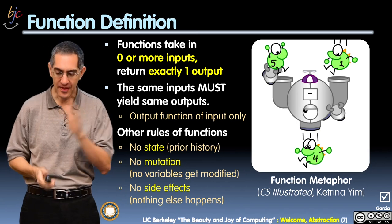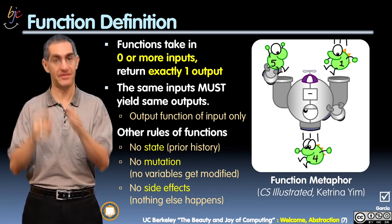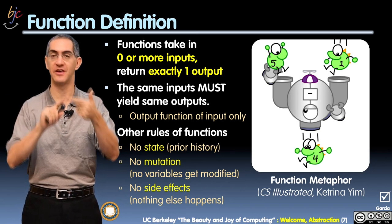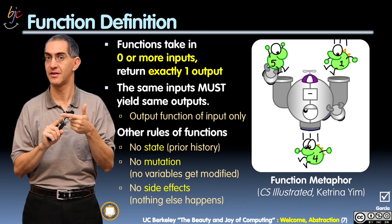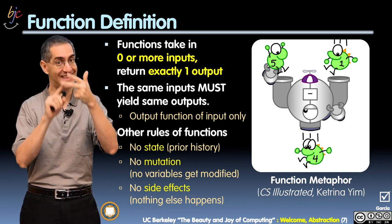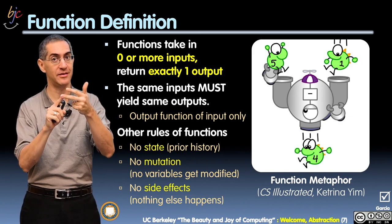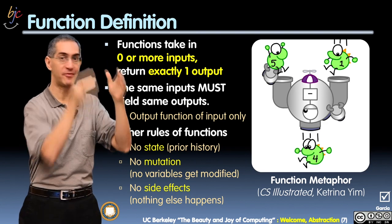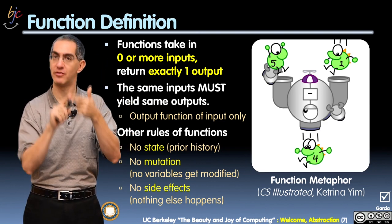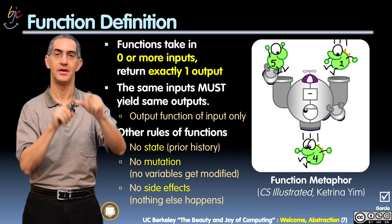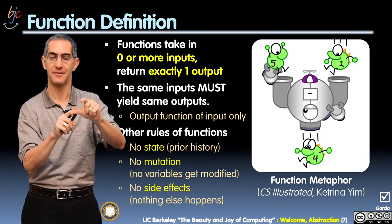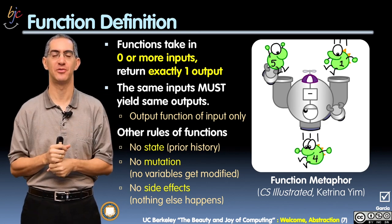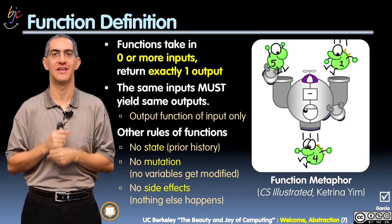So that's what a function is. In summary — and this is an important piece — a function has zero or more inputs, exactly one output, always the same output for the same inputs, and no mutation, no state, and no side effects. Thanks so much, folks. We'll learn more about functions in the next video.